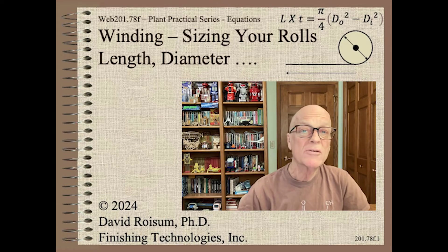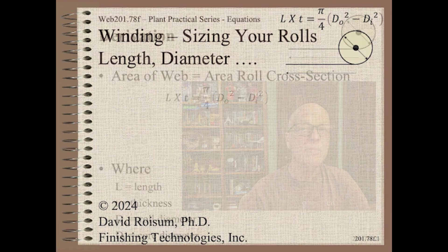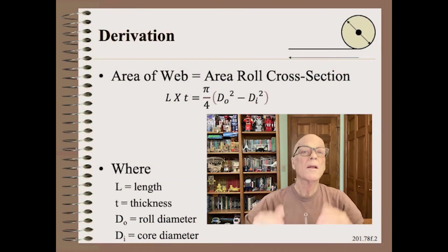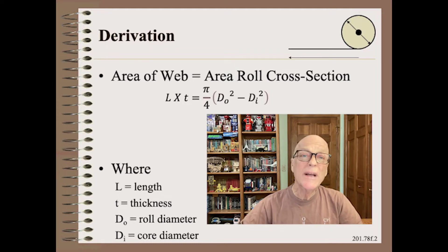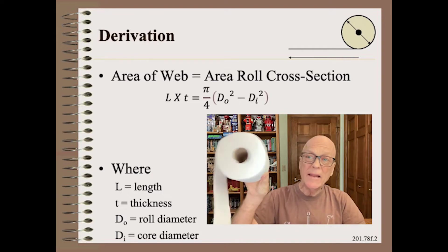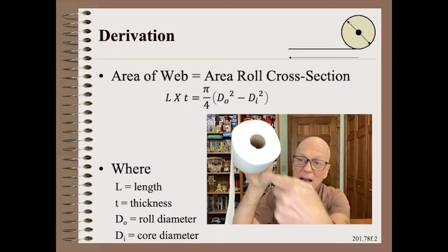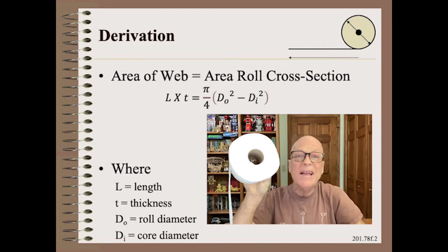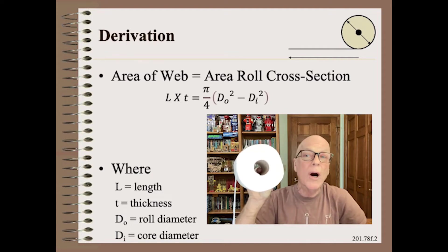No worries kiddos, I'm going to make this as painless as possible. The wound roll sizing equation is so simple to derive that all you need is grade school algebra. The trick is to see how to get started by noting that the cross-sectional area of the web, that is length times thickness, is equal to the cross-sectional area of the wound roll.